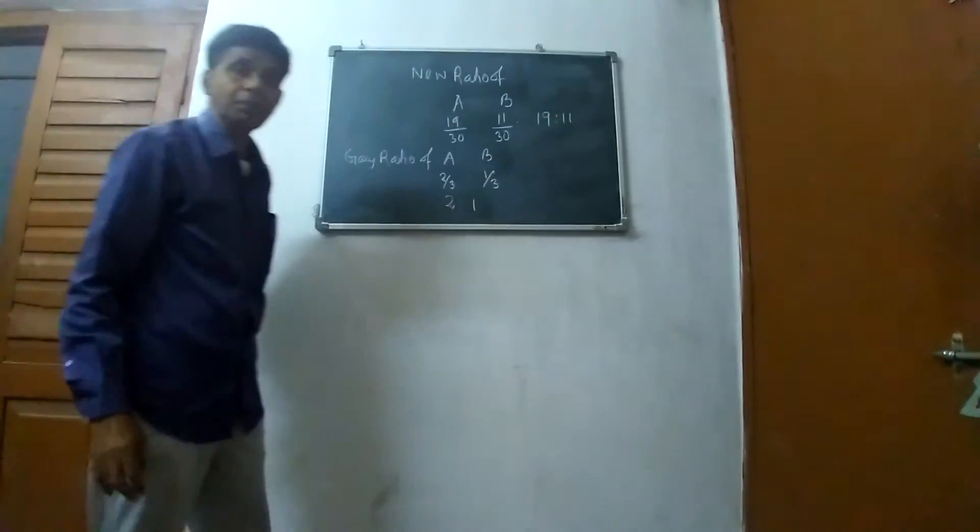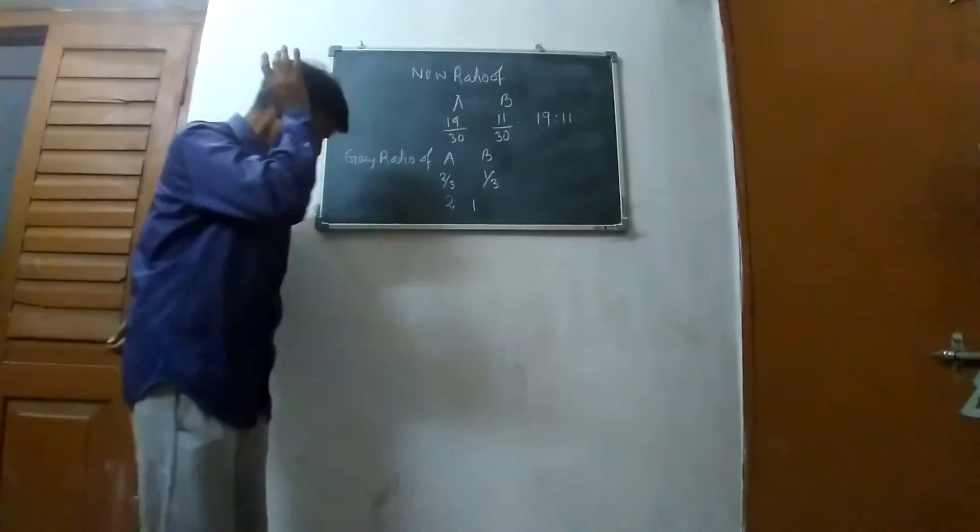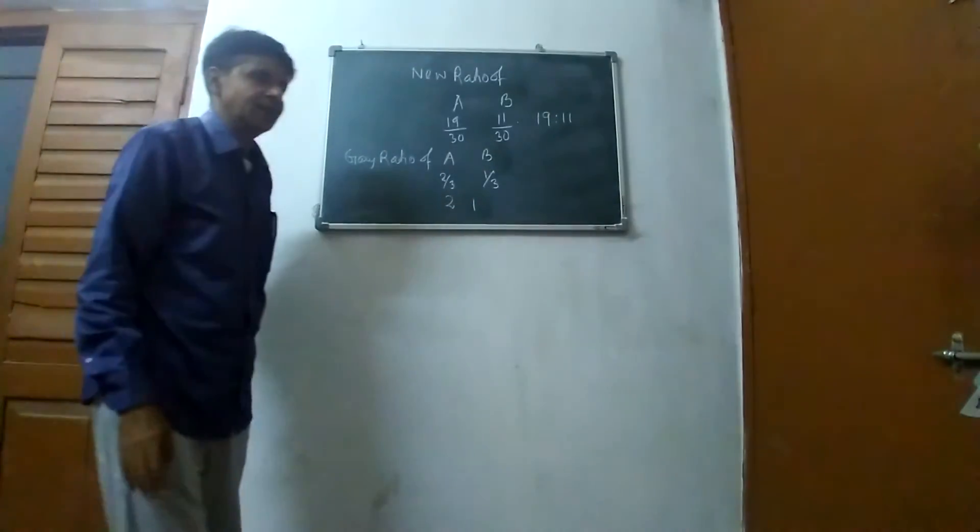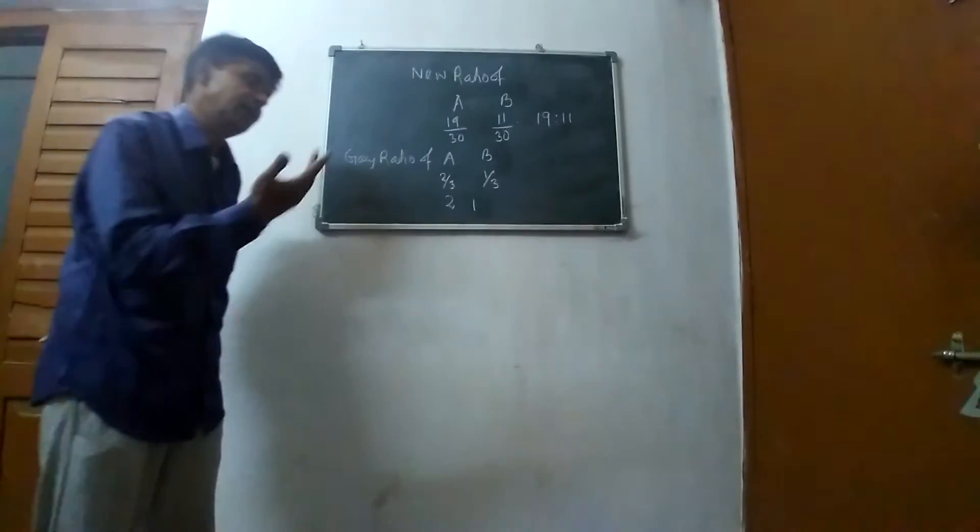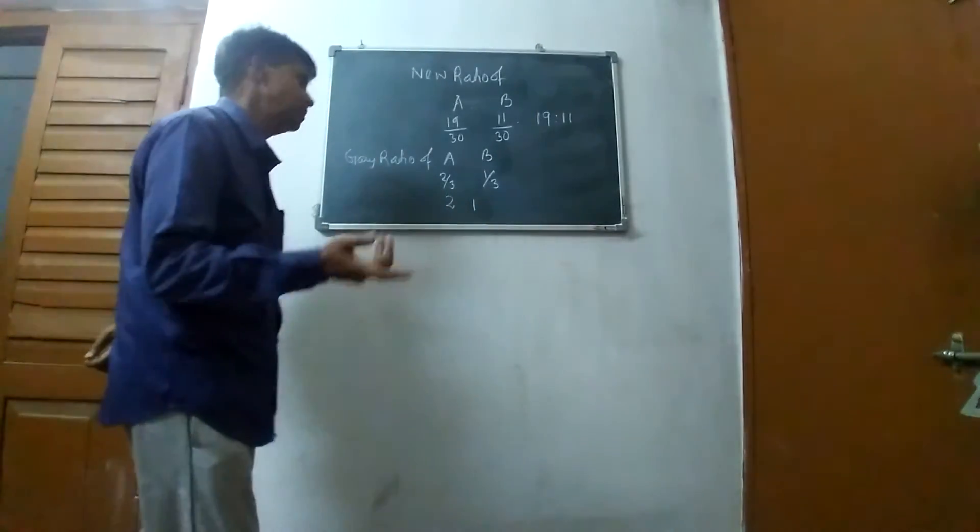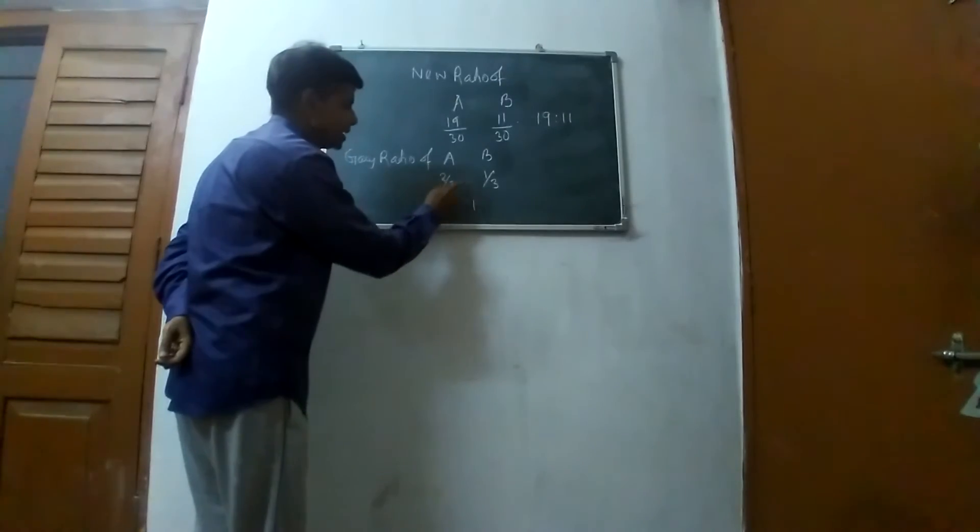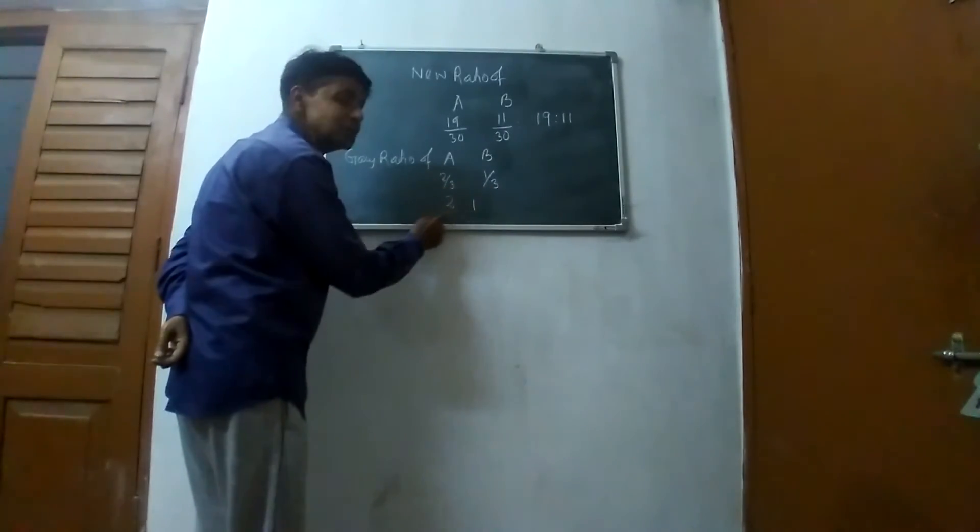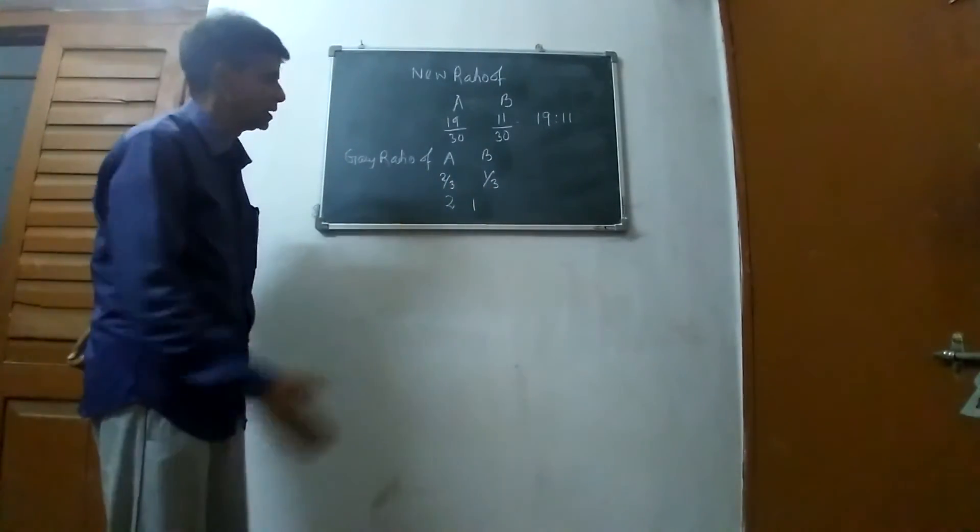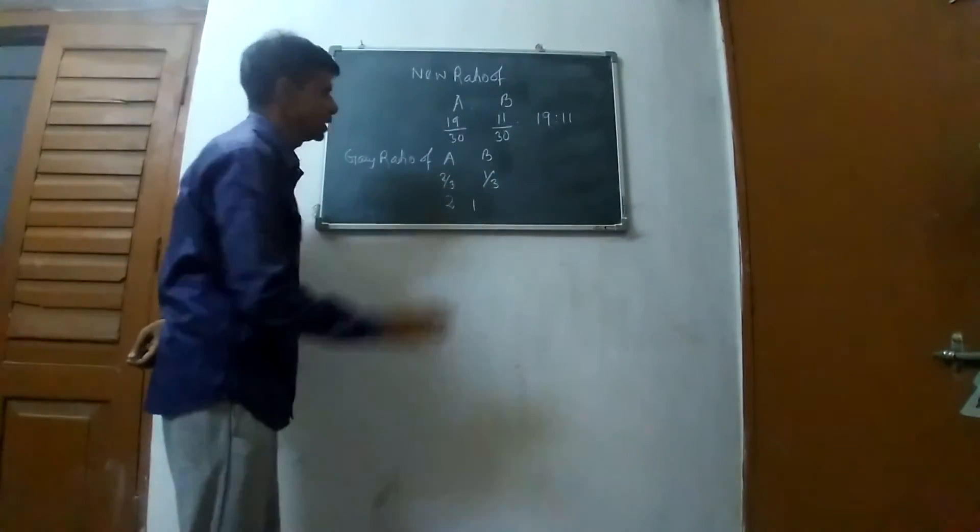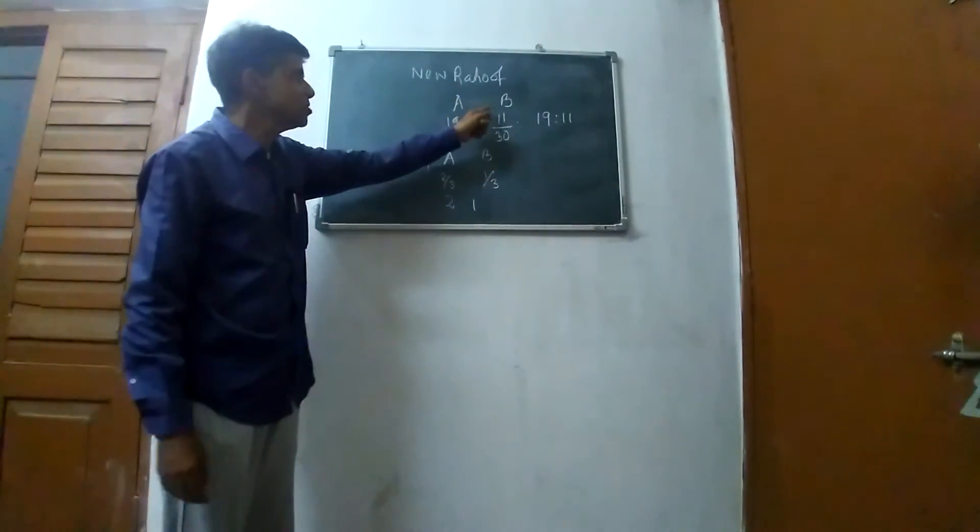And the gaining ratio: C sacrificed and gave 2/3rd to A and 1/3rd to B. A got 2/3rd and B got 1/3rd, so 3 is common, making it 2:1. This is the gaining ratio.